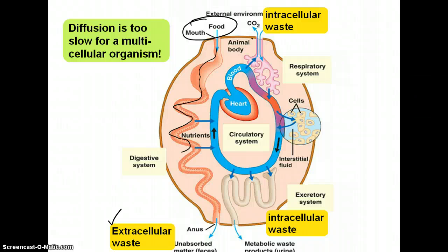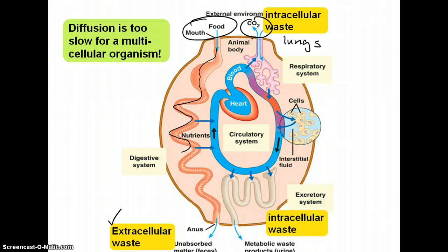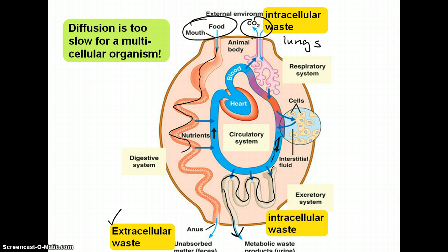One type of intracellular waste is CO2, and we easily get rid of that and expel it via our alveoli or lungs. The other type of waste produced from our body cells is a nitrogenous waste. That travels in your blood and then it goes into your excretory system where it gets filtered from your blood and eventually leaves the body via urine.